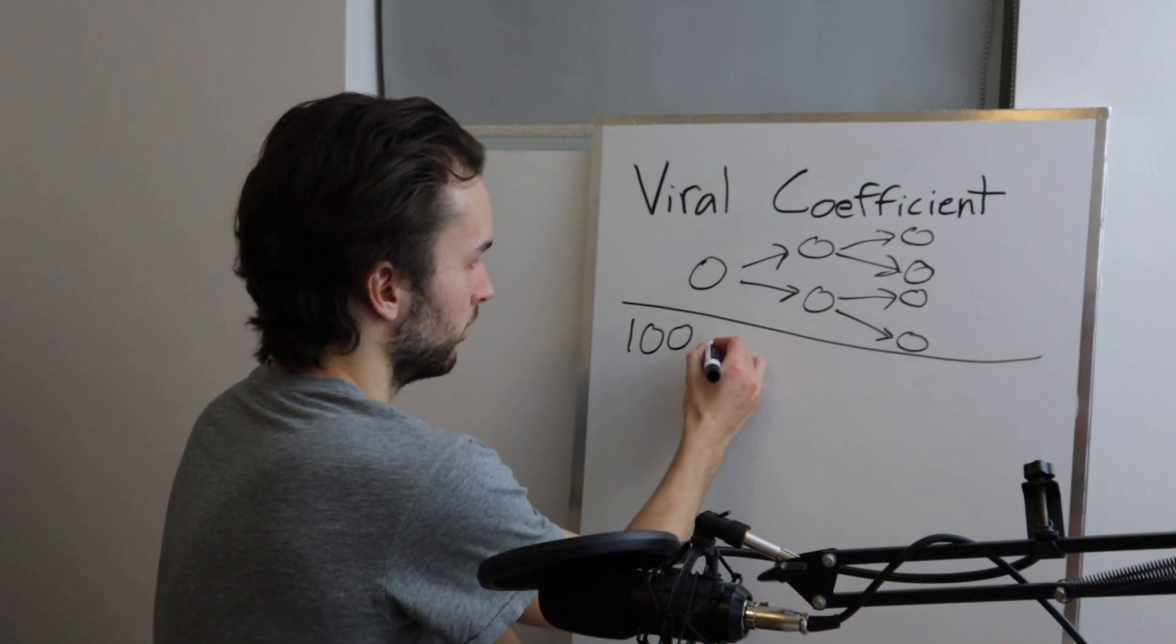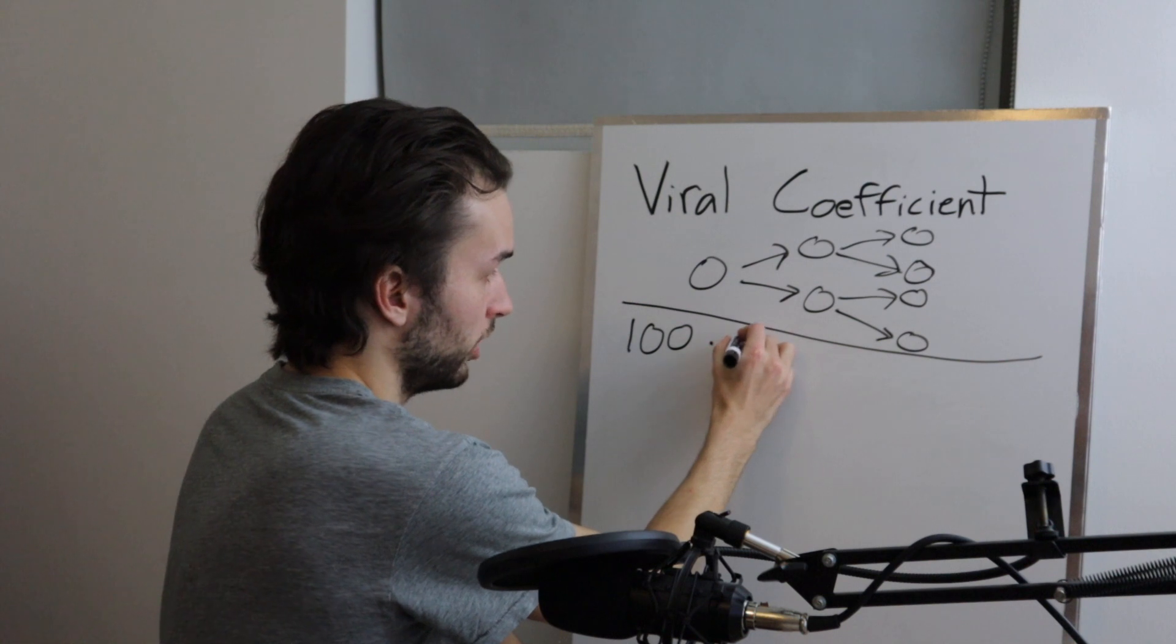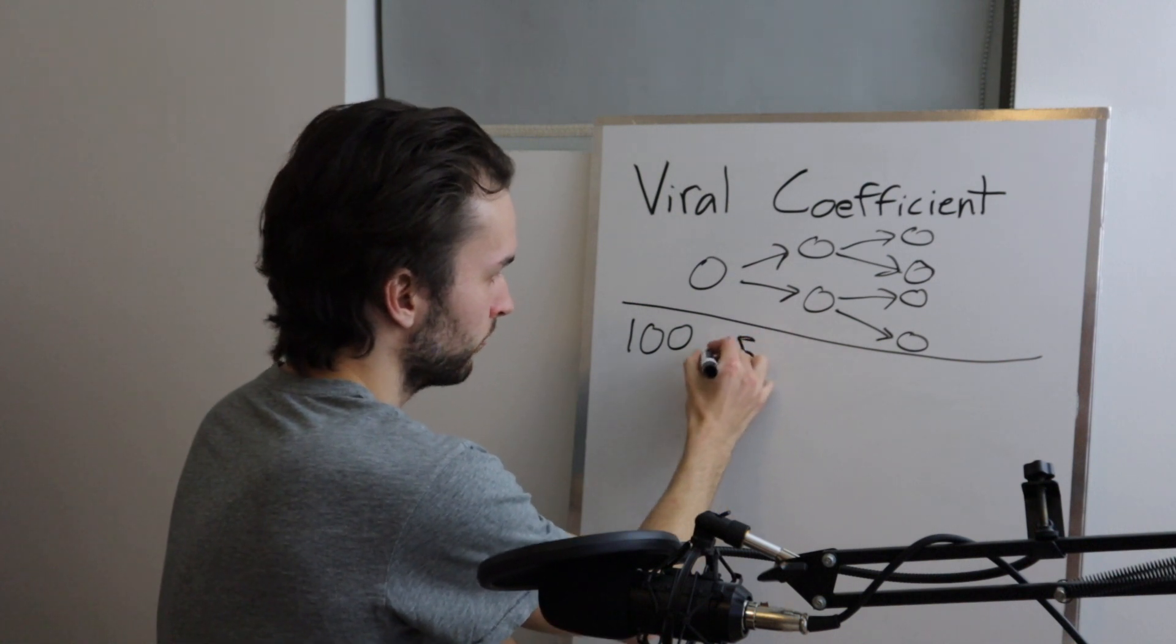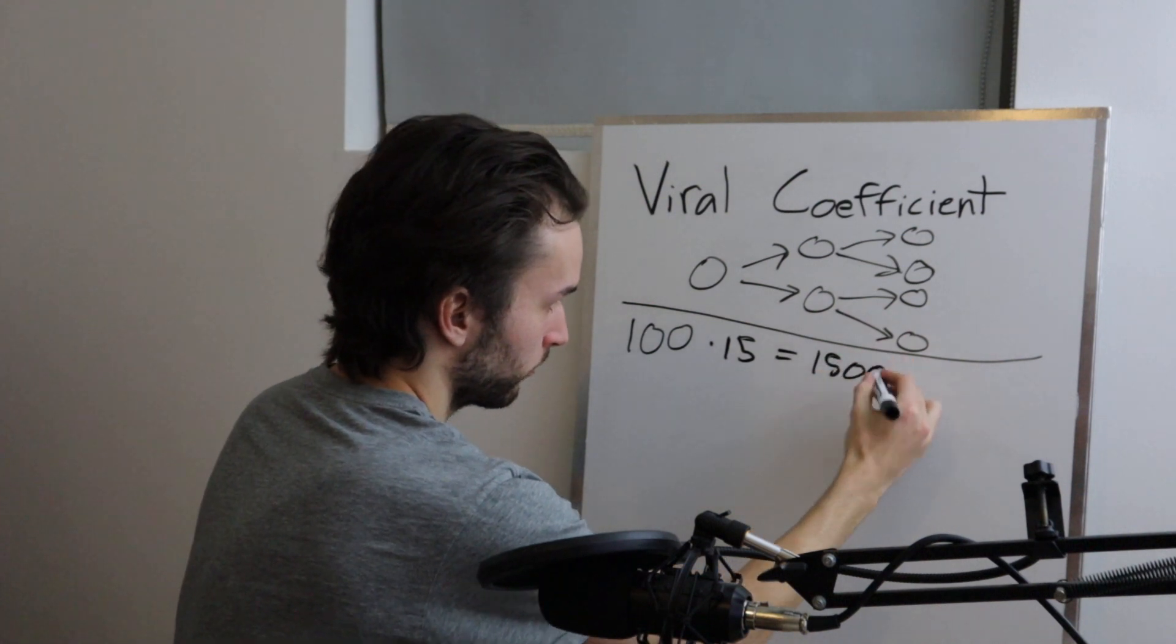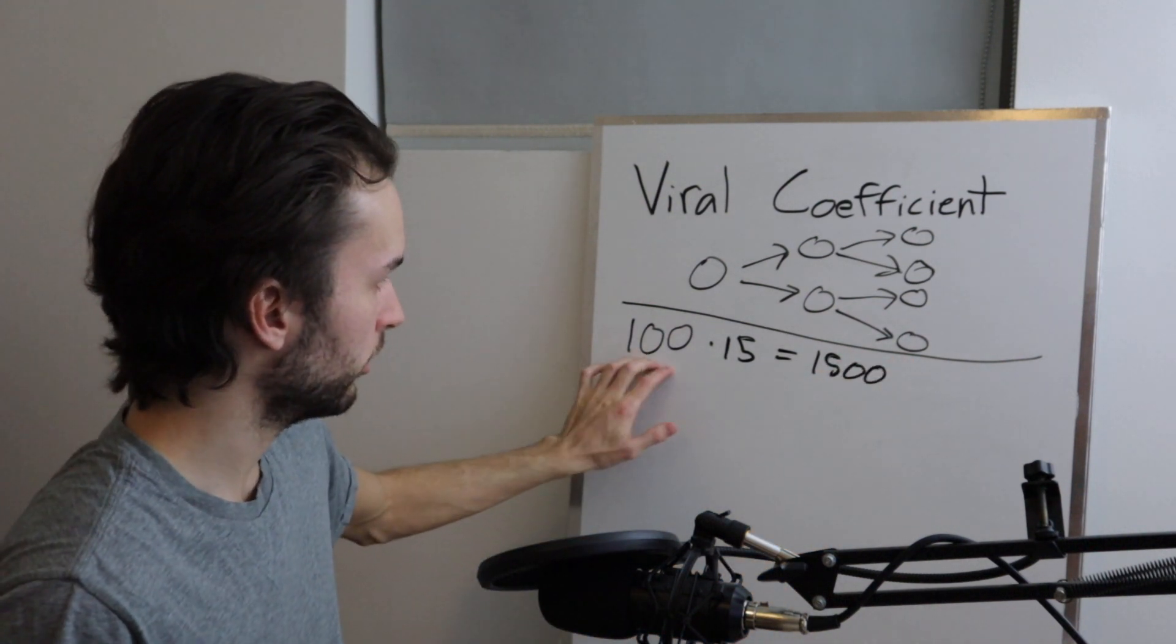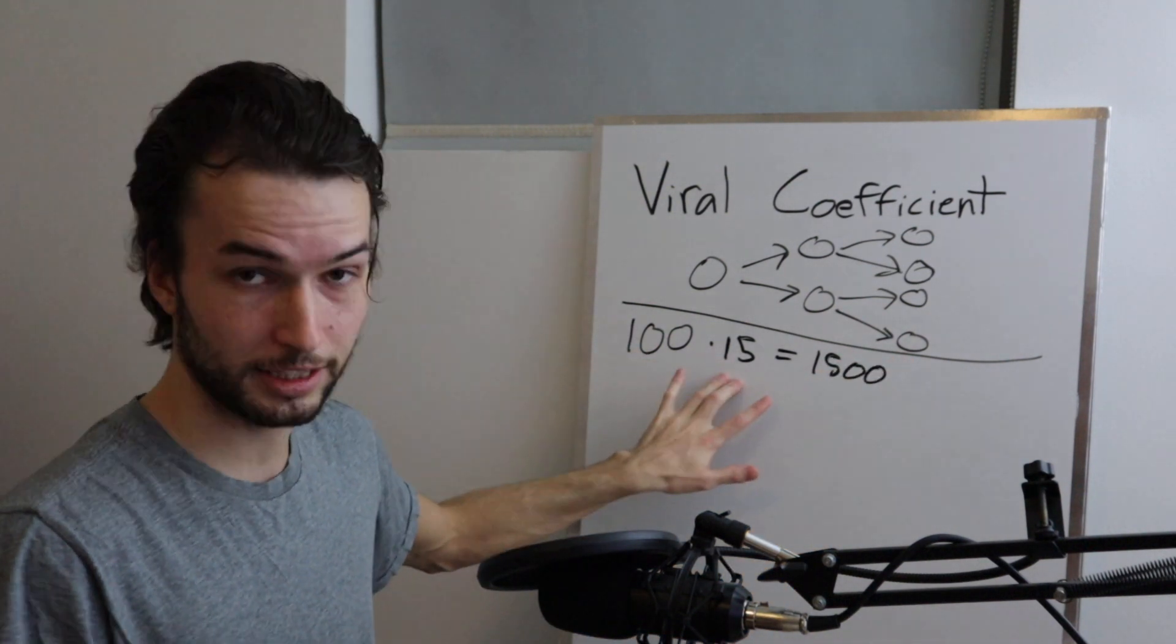And let's say that those 100 users, they share your app on average 15 times. So from that we're gonna times that by the number of shares that they do, which is 15, and that'll give us 1500.